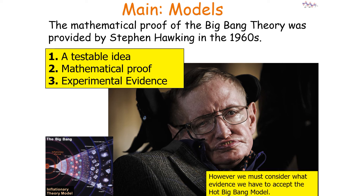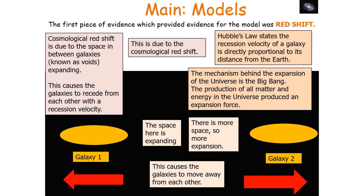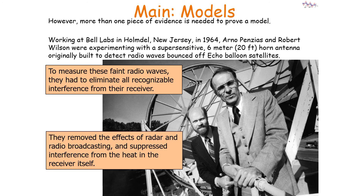The first evidence for the model was redshift. Cosmological redshift is due to the space in between galaxies expanding, causing the galaxies to recede from each other with a recession velocity. The mechanism behind the expansion of the universe is the Big Bang — the production of all matter and energy produced an expansion force causing our galaxies to move away from each other. However, more than one piece of evidence is needed to support a model.